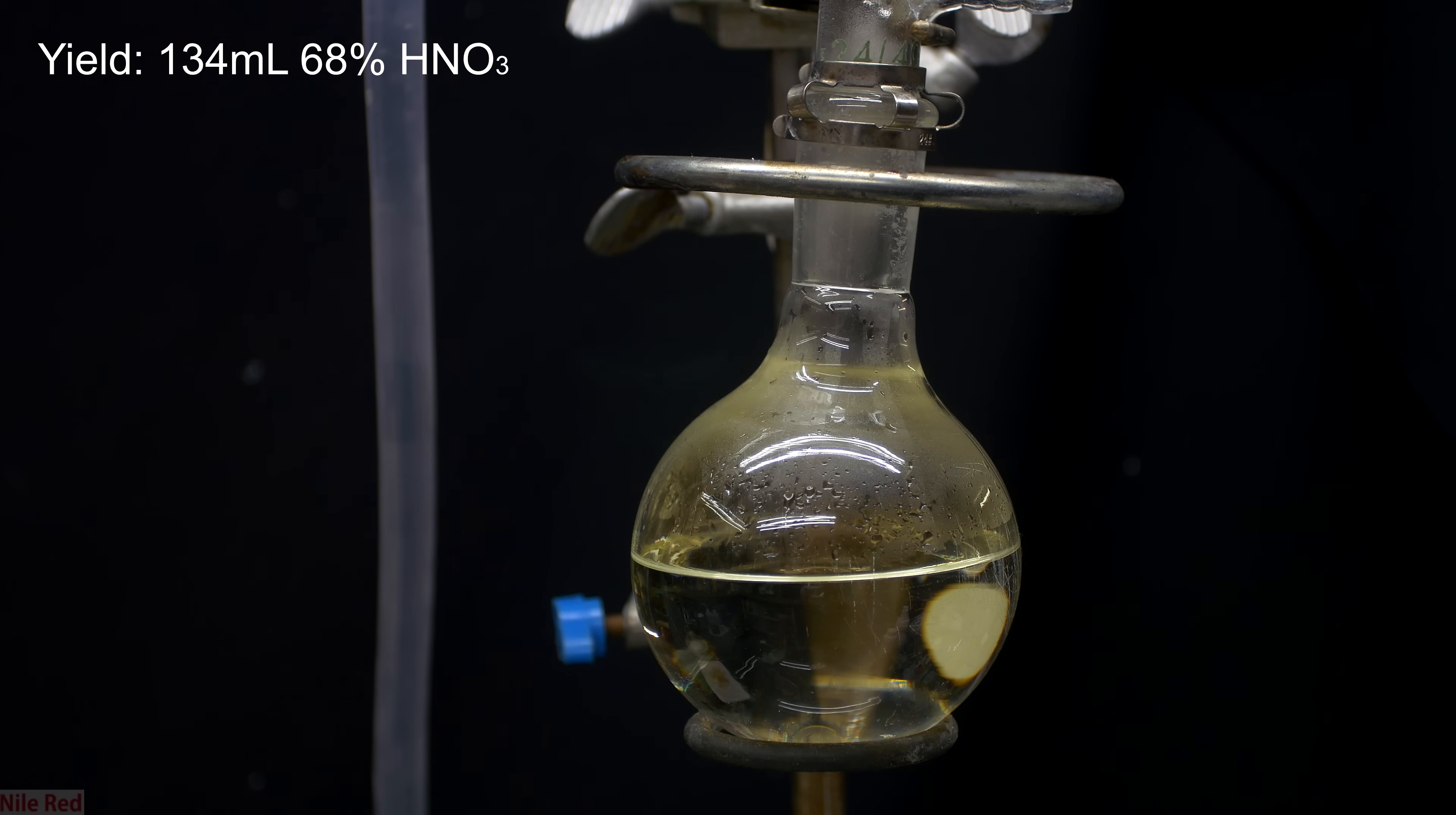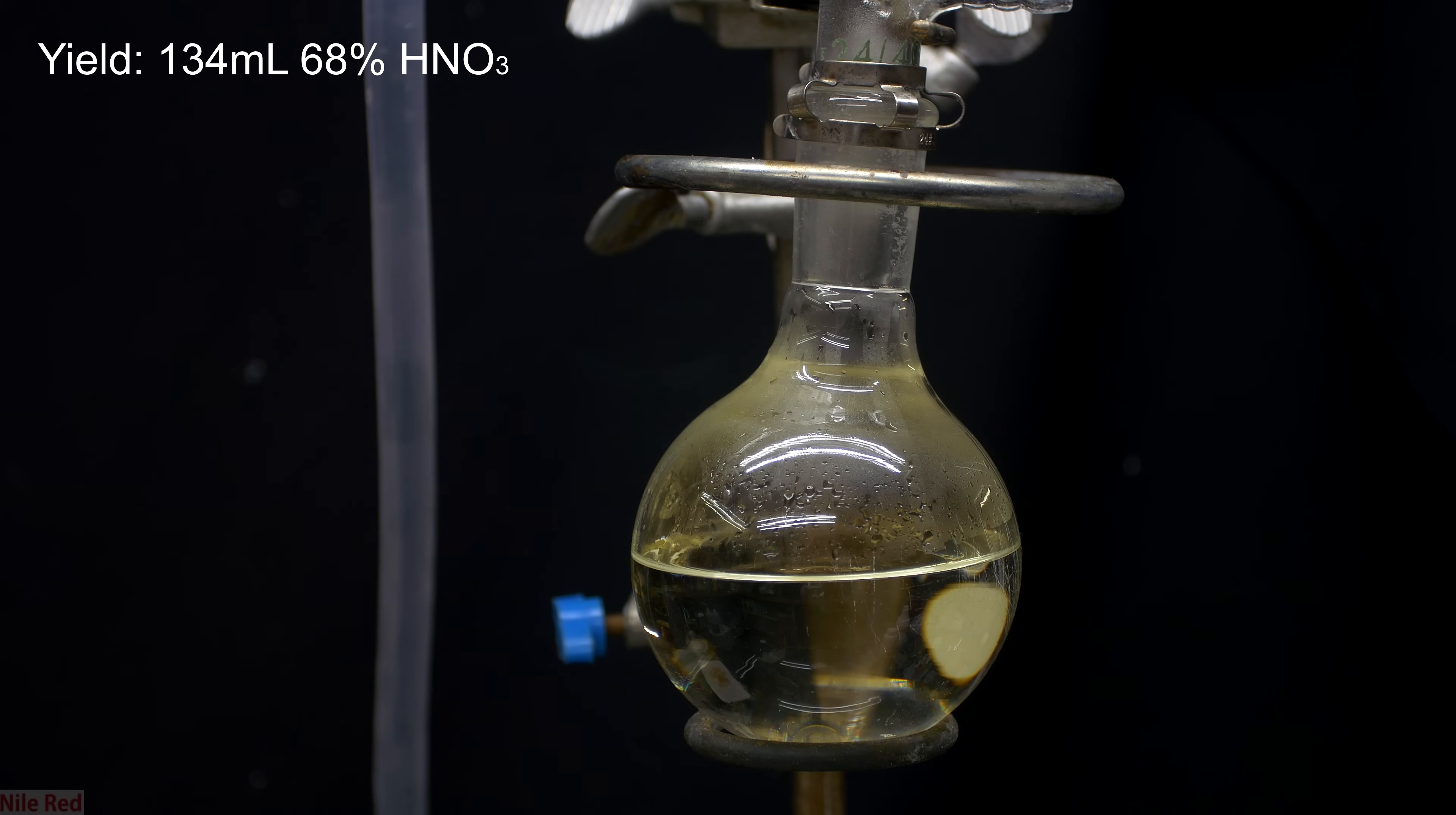When all is done, we're left with 134 milliliters of slightly yellow azeotropic nitric acid. This yellow color occurs because a little bit of the nitric acid degraded due to the heat of the distillation. To me the yellow color isn't a big problem, but if you want to clear it up you can bubble dry air through it until all of the nitrogen dioxide gas is expelled.